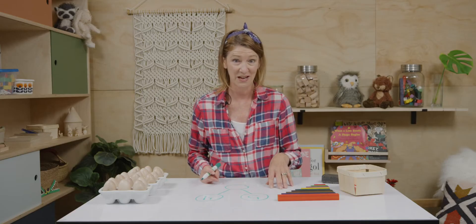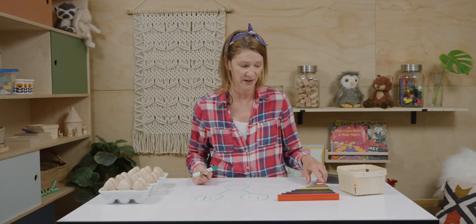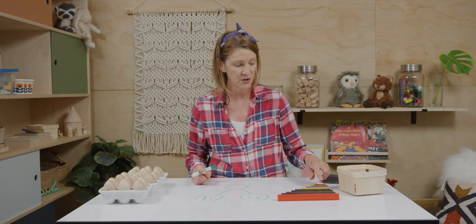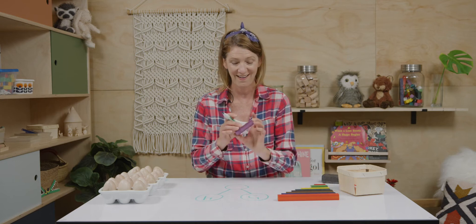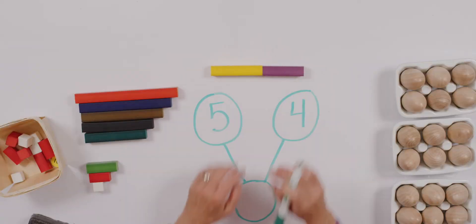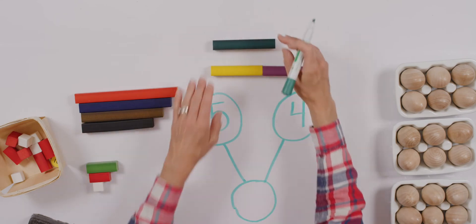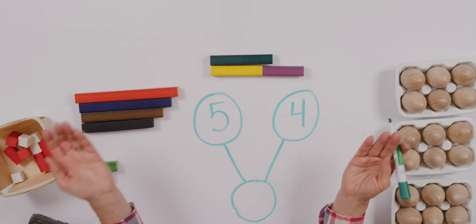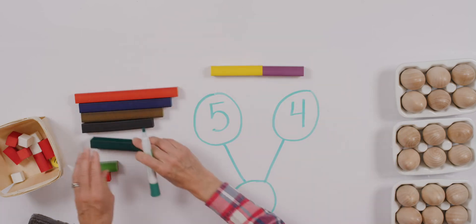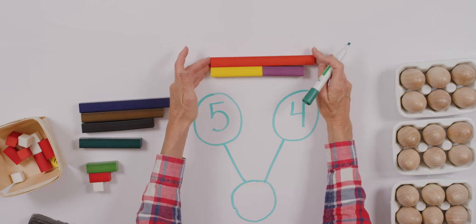I'm going to use my rods to help show that before we answer even though I bet you already know. One, two, three, four, and five. I want to see what four and five make. Well, this one I know equals six. Not big enough. This one I know equals ten. Oh, too big.